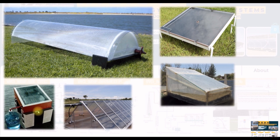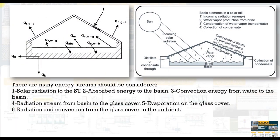We have single roof type and so on. It has many configurations but the concept is considered the same. As you can see, we have four basic elements for such a configuration: incoming solar radiation, and water vapor production inside the still.